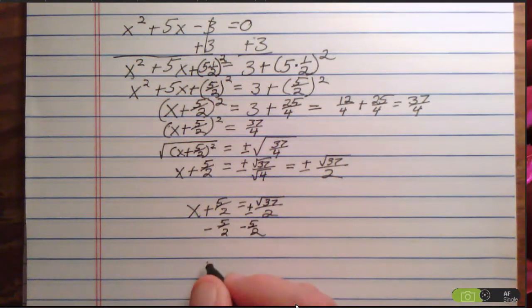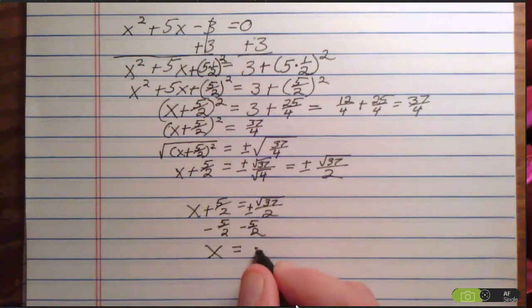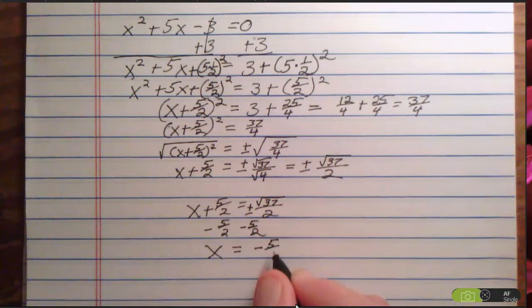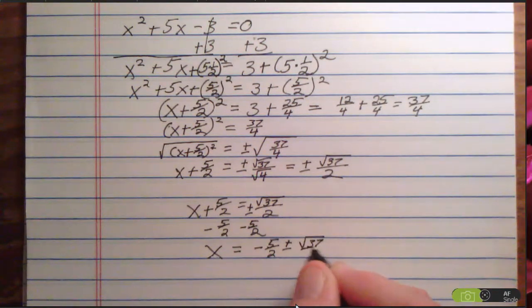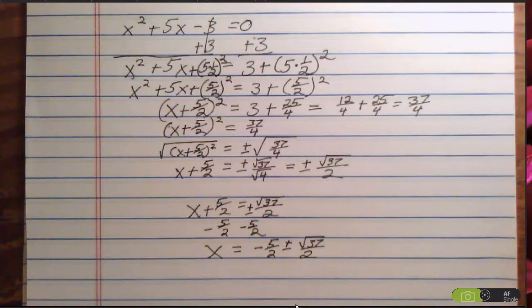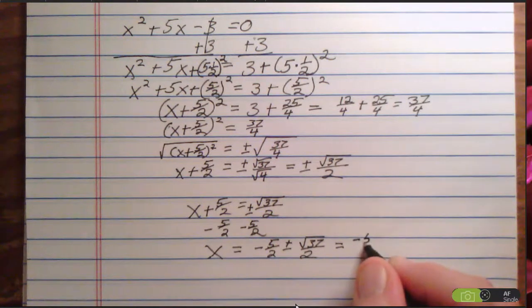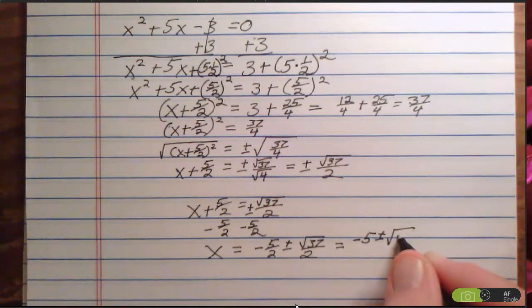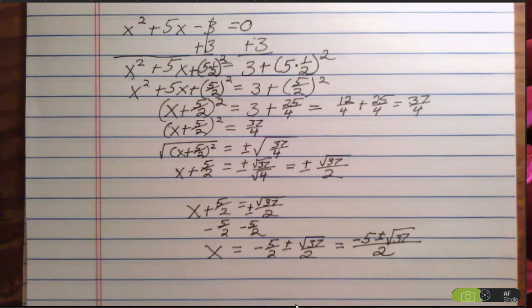So I have x = -5/2 ± √37/2. Since they have the same denominator, I can write this as x = (-5 ± √37)/2.